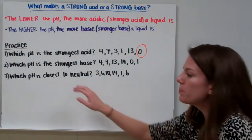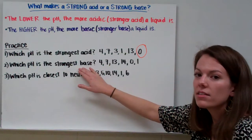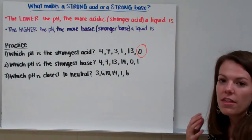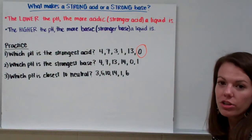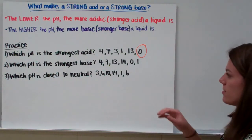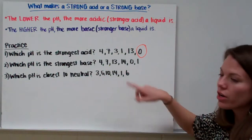Our next question says, which pH is the strongest base? Remember, bases have pHs that are over 7, and the closer you get to 14, the stronger the base it is. So 14 would be our strongest base.